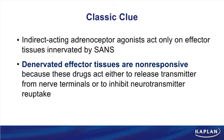If you get an experimental test question comparing a direct-acting agonist to an indirect-acting agonist like cocaine, be alert — this is very likely a denervation question. In the first part of the experiment, both drugs can activate the organ. In the second part, only the direct agonist continues to work and the indirect agonist does nothing. The question asks what happened between experiment one and experiment two — the answer is the nerve has been removed.